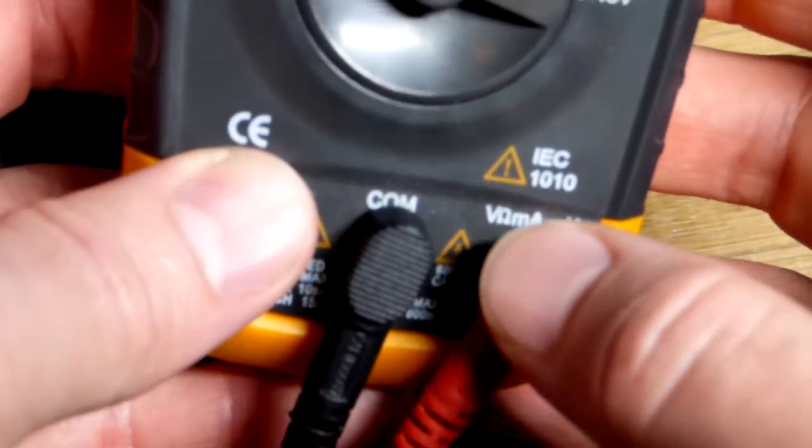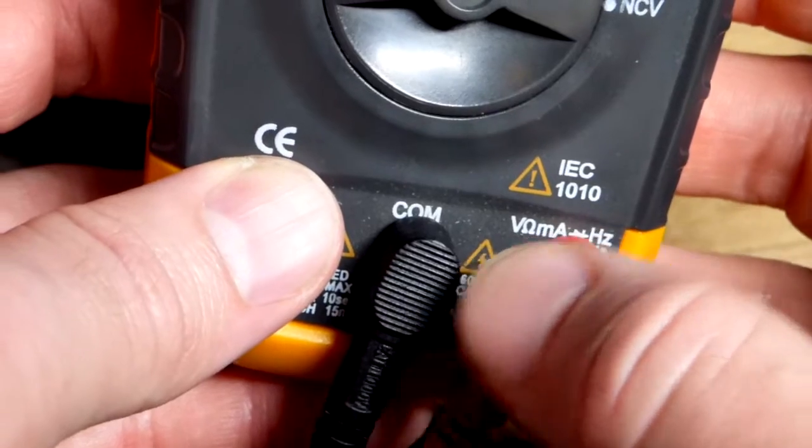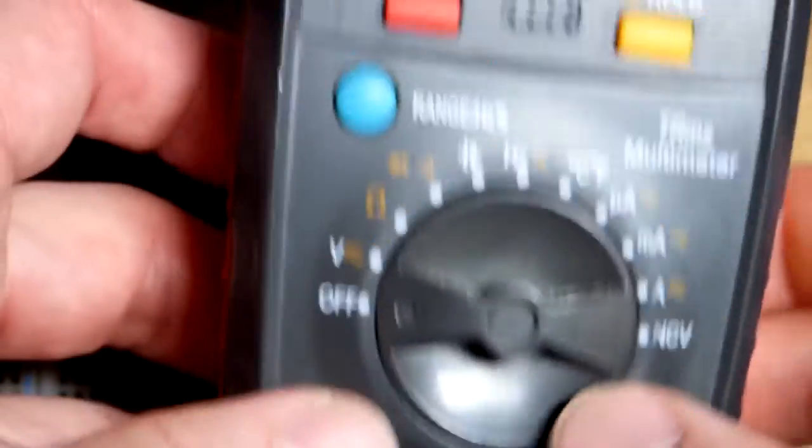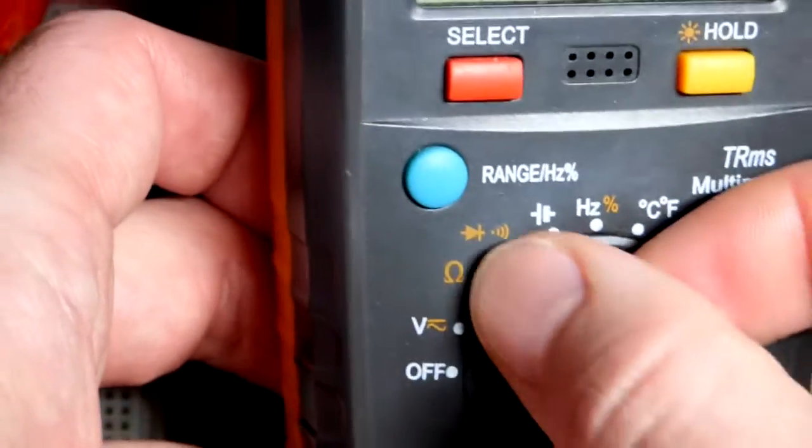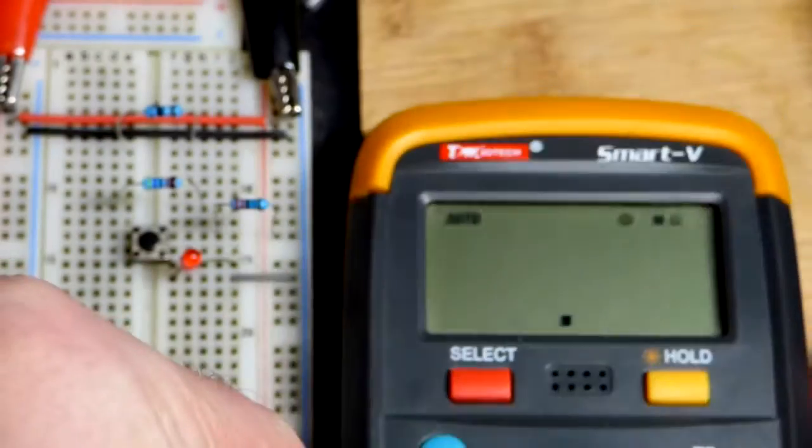So now in this video we're going to measure resistance with an auto-ranging meter. We need the red probe on the omega symbol there for resistance, black probe for common, and there's only one setting for resistance there.